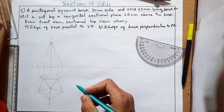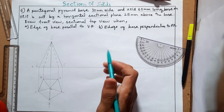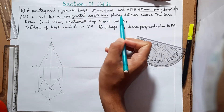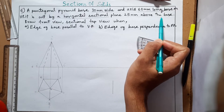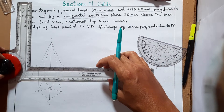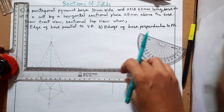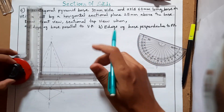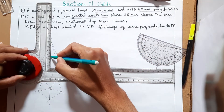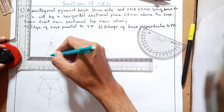Construction is completed. Now draw the cutting plane — horizontal section plane 25 mm above the base. Always measure parallel to the base and go 25 mm up. The cutting plane line is drawn there.